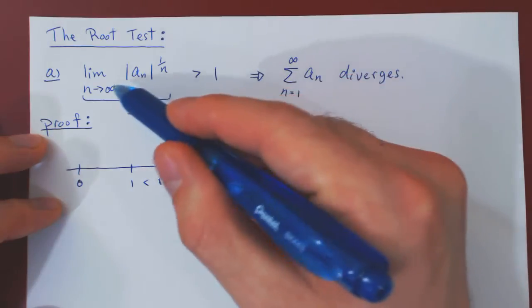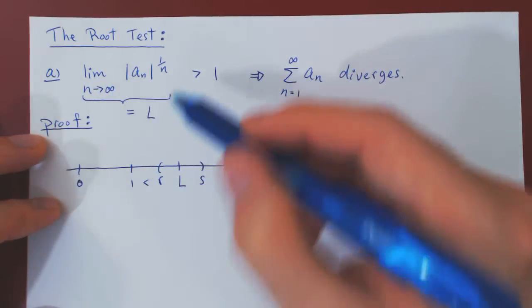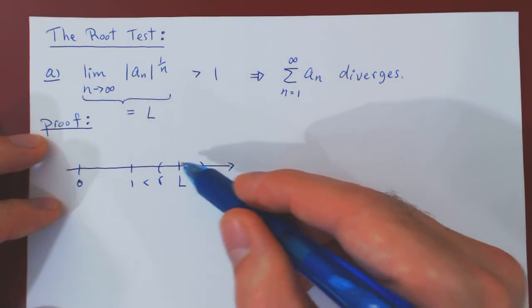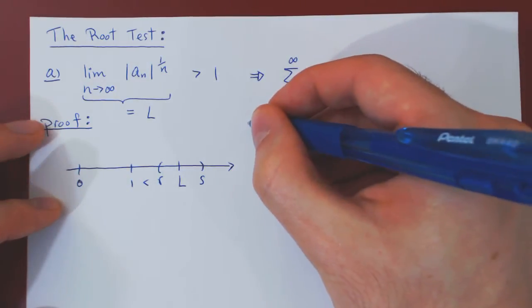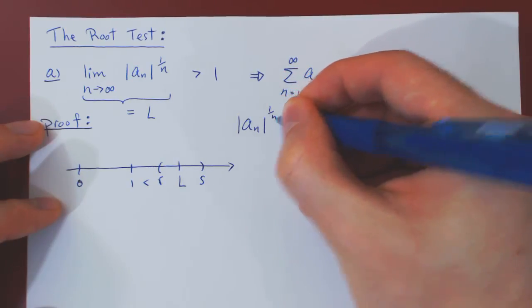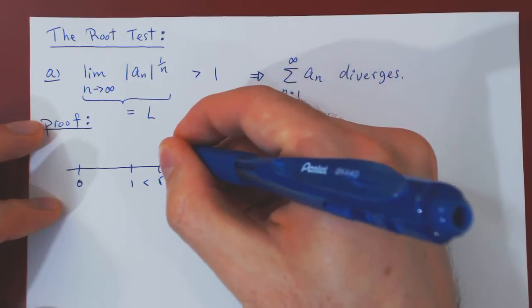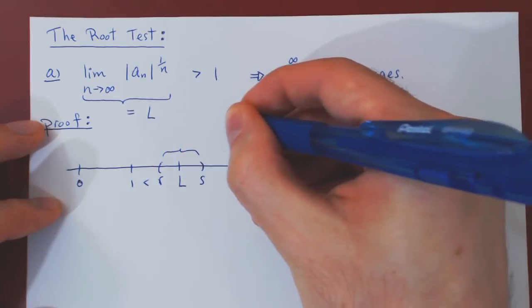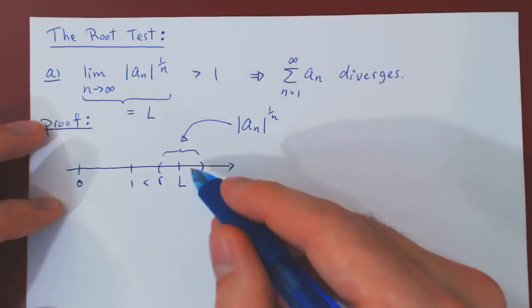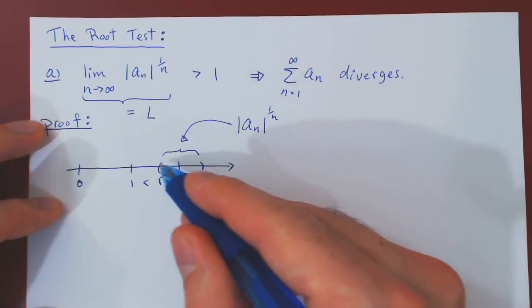Which means, if we take n to be big enough, we can then have every value of our sequence be fitting in this small interval. So the nth root of a_n in absolute value will be contained in our small interval.